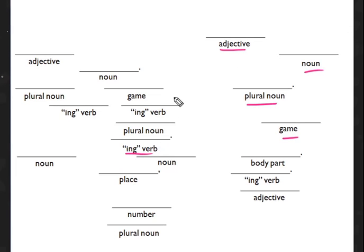Mad Libs is a game where - usually you can buy it as a book. In this game you think about words: you think about an adjective, a noun, a plural noun, a game, an -ing verb, and you write them all in a list. So we are going to write all of these words.